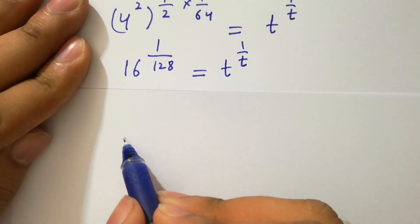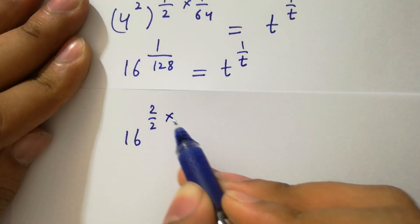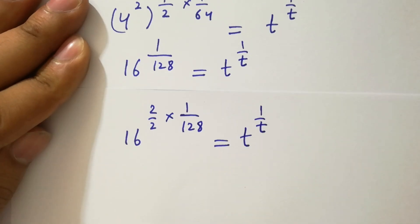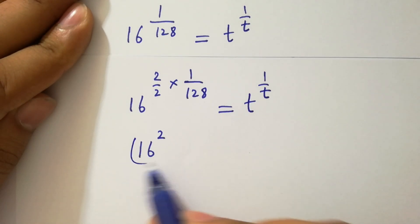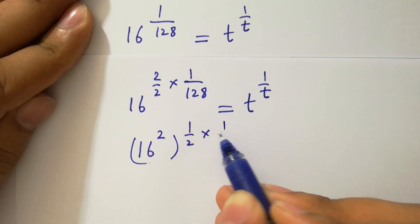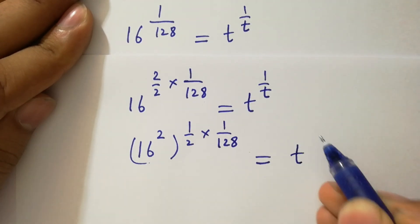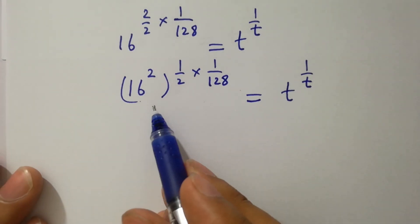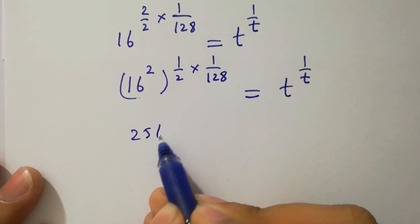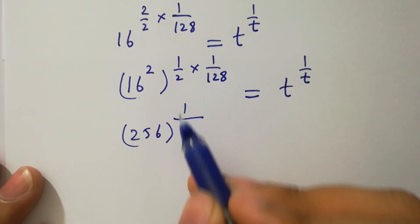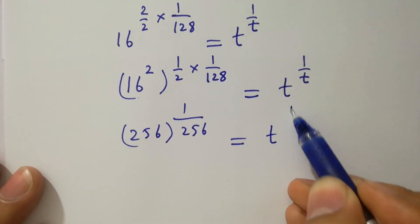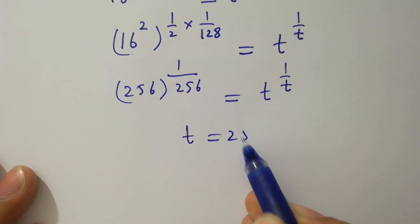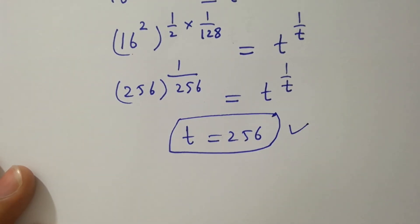Again, 16 to the power 2 times 1 over 128 gives 16 to the power 1 over 2, times 1 over 128, equal to t to the power 1 over t. Next, 16 times 16 is 256, and 128 times 2 is 256, so 256 to the power 1 over 256 equals t to the power 1 over t. Since bases and powers are the same, t equals 256, which is the value of t.